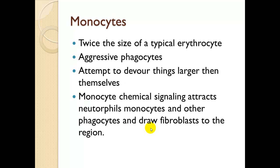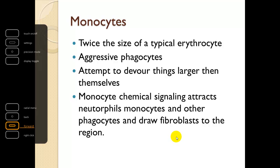Monocytes are twice the size of a typical erythrocyte. They are aggressive phagocytes that attempt to devour things larger than themselves. Chemical signaling from monocytes attracts neutrophils, monocytes, and other phagocytes, and draws fibroblasts to the region — essentially ringing the dinner bell so that anything phagocytic comes to the area.